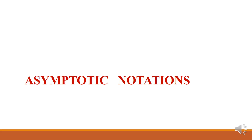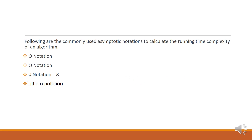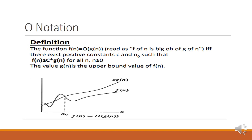Hello everyone. In this video we learn about asymptotic notations — what they are and why they are used. Asymptotic notations are used to rank or compare the order of growth, representing the running time of an algorithm. The notations normally used are: Big O notation, Big Omega notation, Theta notation, and Little o notation.